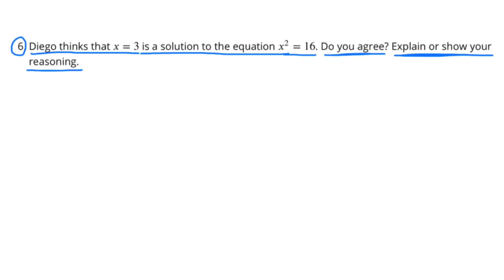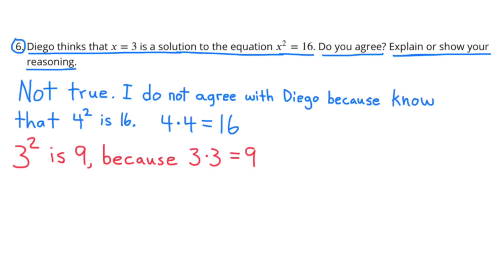Number 6. Diego thinks that x equals 3 is a solution to the equation x squared equals 16. Do you agree? Explain or show your reasoning. Well, that's not true, so I don't agree with Diego, because I know that 4 squared, or 4 times 4, equals 16, and 3 squared, or 3 times 3, equals 9.